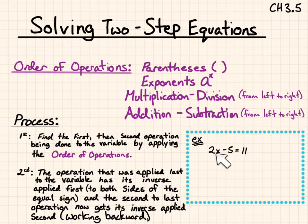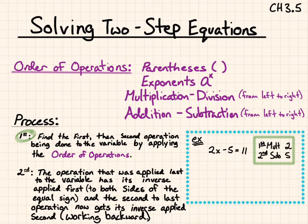So example, I have 2 times the number minus 5 equals 11. First, I'm going to figure out what's being done to my variable using order of operations. It looks like x is being multiplied by 2. So first being multiplied by 2, and then second, it's being subtracted by 5. So now I want to think about how do I undo that? The operation that was applied last was subtracting 5. So the opposite of subtracting 5 would be adding 5. I would add 5 to both sides. Now, it helps to see that things are going away. Negative 5 plus 5 goes to 0, and I'm left with 2x equals 16.